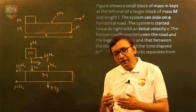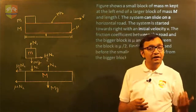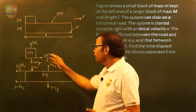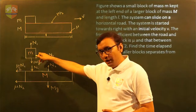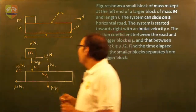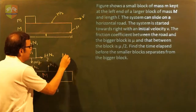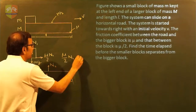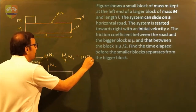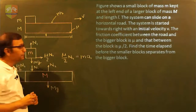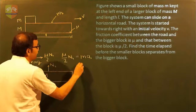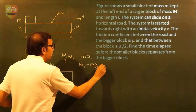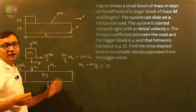Writing Newton's second law for small m along the horizontal direction: mu/2 times N1 is the only horizontal force, so mu/2 × N1 = m × a1, where a1 is the acceleration of small m. Along the vertical direction: N1 minus mg equals zero, since there is no vertical acceleration. So N1 = mg.